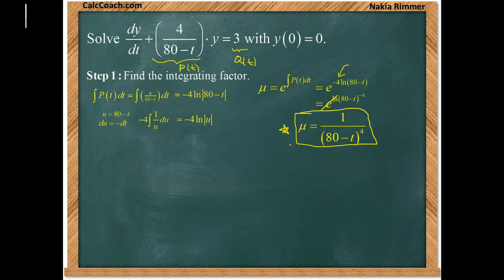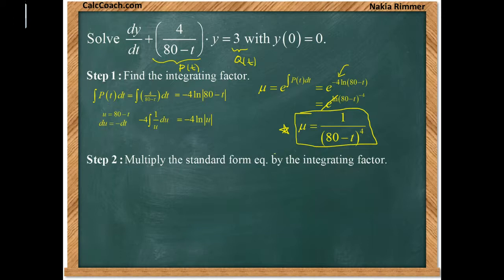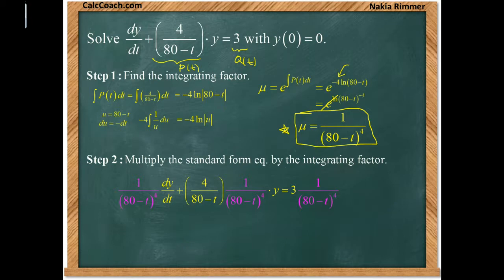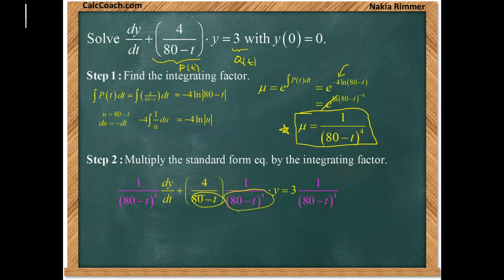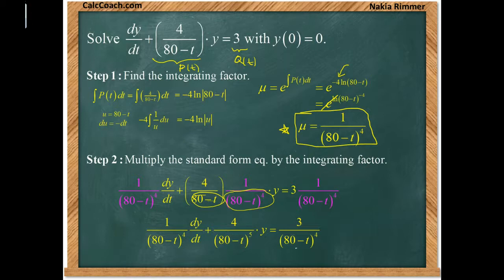The integrating factor is special because multiplying through by it simplifies the left-hand side into a product rule expression. After multiplying through, the left side becomes the derivative of y/(80 − t)^4, and on the right side we have 3/(80 − t)^4.